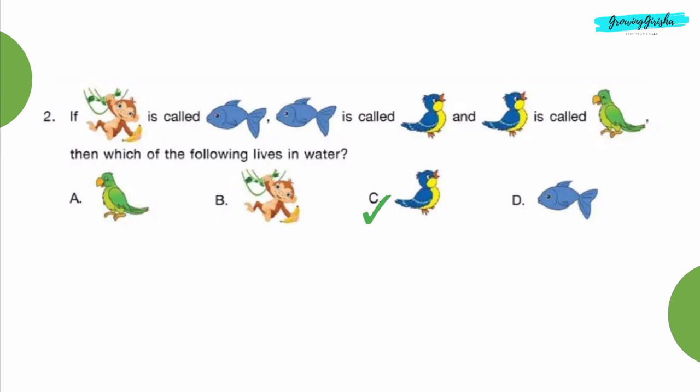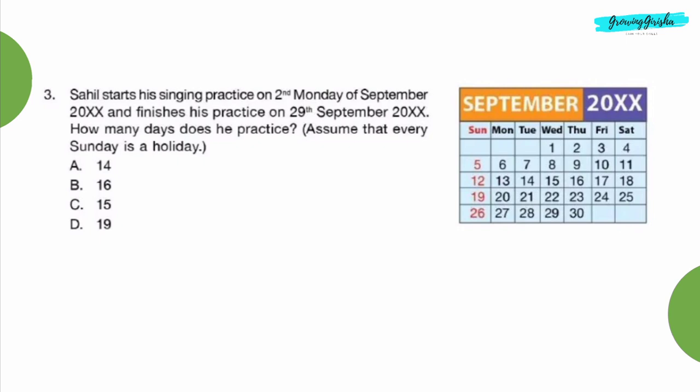Question 3: Sahil starts his singing practice on second Monday of September 2000XX and finishes his practice on 29th September 2000XX. How many days does he practice? Assume that every Sunday is a holiday. Option C, 15.